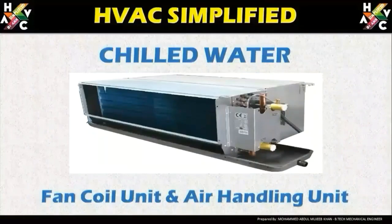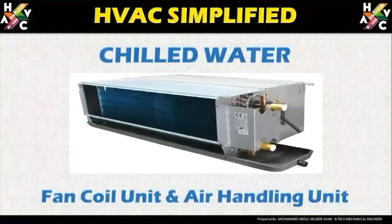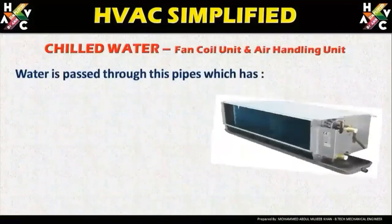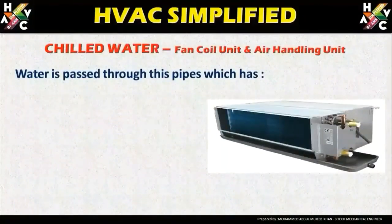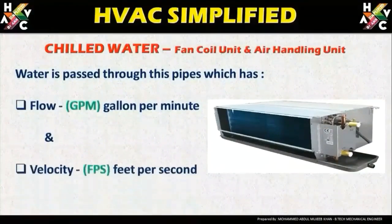For any chilled water air handling unit or fan coil unit, you need to find the GPM depending on the design criteria. The following parameters are required, which we can derive after getting the capacity of the fan coil unit and the air handling unit. Water is passed through the pipe, which has flow in GPM and velocity in feet per second.